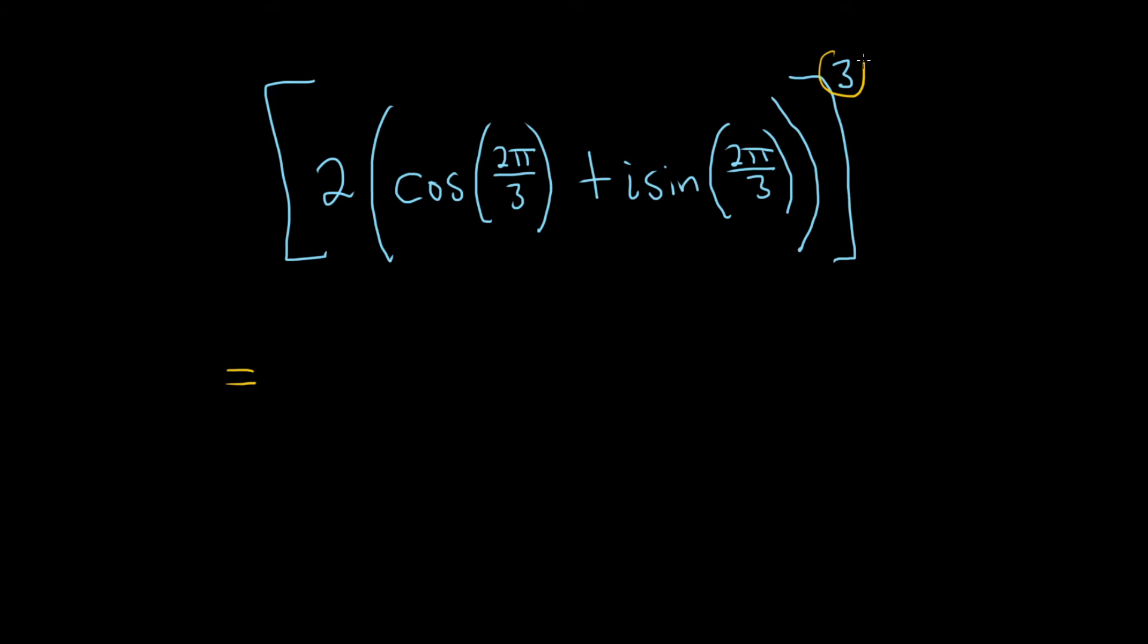so basically you take the 3 and you raise this to the third power, so 2 cubed. And it's being multiplied by all of this, so essentially you're raising all of this to the third power also.